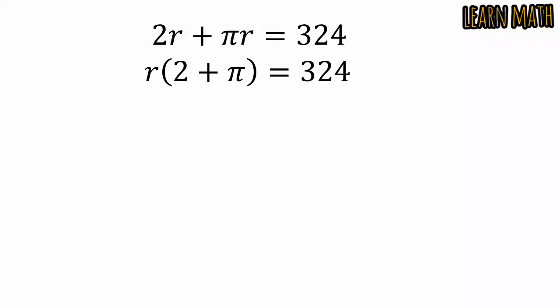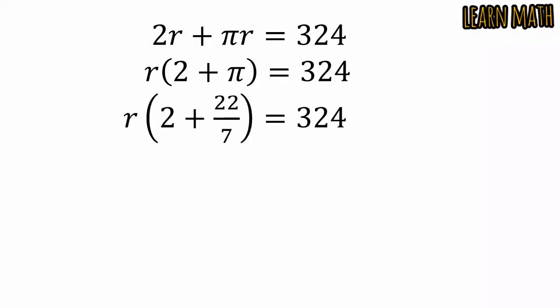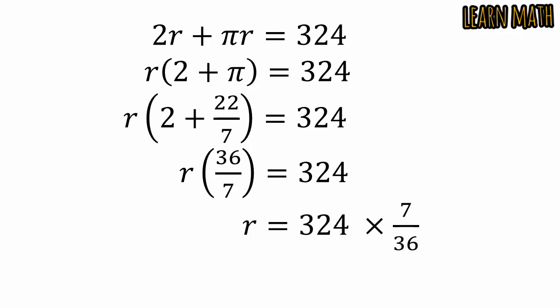Take r common. Assume π is equal to 22/7. Simplify and we get r times 36/7 equals 324. Multiplying both sides by 7/36 and simplifying, we get r is equal to 63.